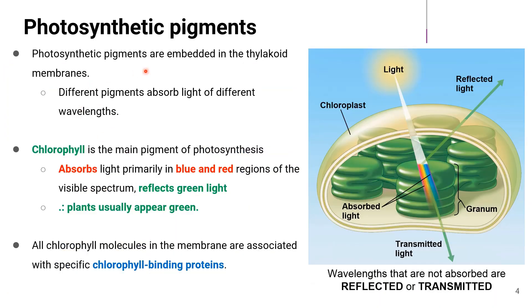Now let's look at photosynthetic pigments. Photosynthetic pigments are embedded in the thylakoid membranes, and there are different pigments which absorb light of different wavelengths.